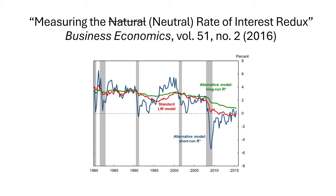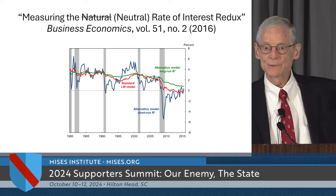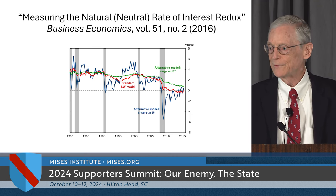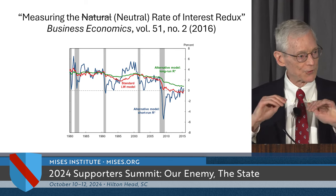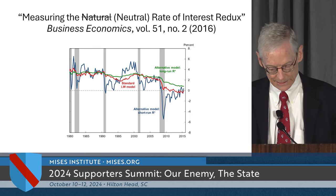This is a chart of the estimates that Laubach and Williams made in their 2016 article. The red line is their standard model — the estimate of the neutral rate of interest that the Fed should target to hit its dual mandate. The green is the alternative long-run estimate of R star, the neutral rate of interest, more smoothed out, showing the long-term trajectory that policy aims to hit. The blue line is the short-run estimate, which shows tremendous variation because of the cyclical movement of price inflation rates and real GDP over the cycle — all smoothed out in the red and green alternatives.